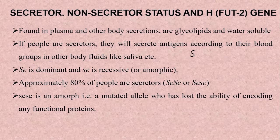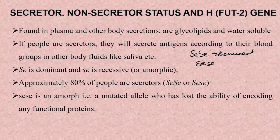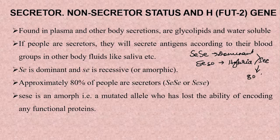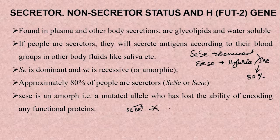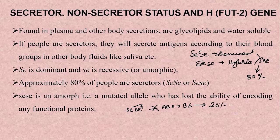Anybody having an Se/Se pure dominant condition or an Se/se hybrid condition is going to be a secretor, falling under the 80 percent secretor category. Somebody having the recessive pure form of the amorphic se gene is not going to show the presence of ABH antigens in body secretions, and will fall under the 20 percent non-secretor population.